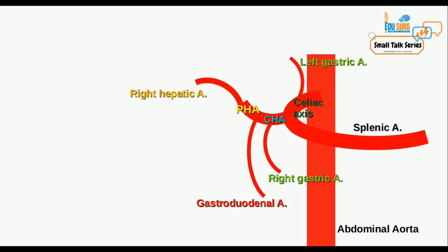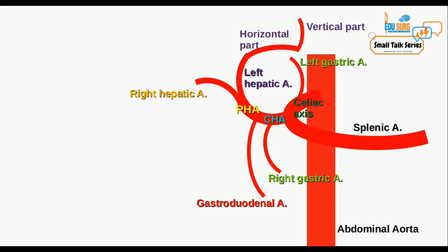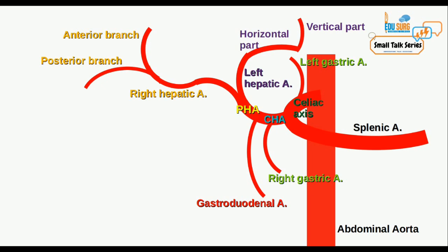The hepatic artery proper gives rise to the right and the left hepatic artery. Intrahepatic, the left hepatic artery has a horizontal part and a vertical part, and this vertical part gives medial and lateral branches to segments 2, 3, and 4. The right hepatic artery gives a posterior branch which is horizontal — so the right posterior pedicle is horizontal in direction — and an anterior branch which is part of the right anterior pedicle, which is vertical in direction.